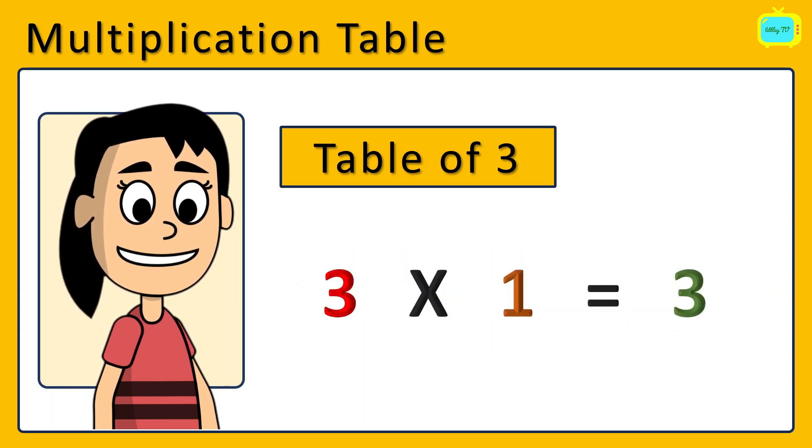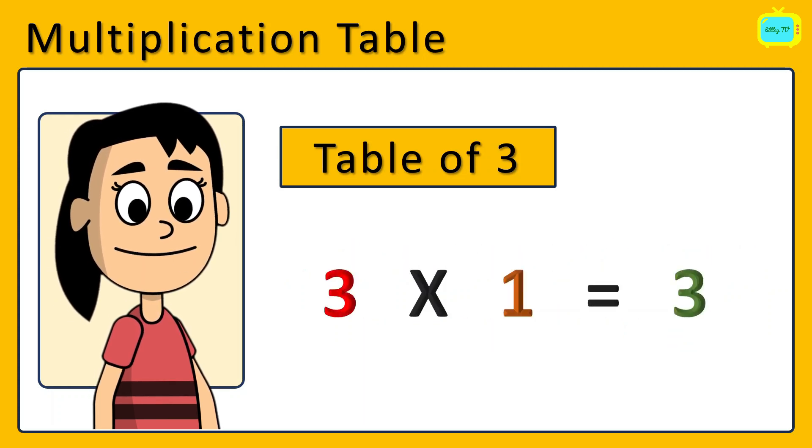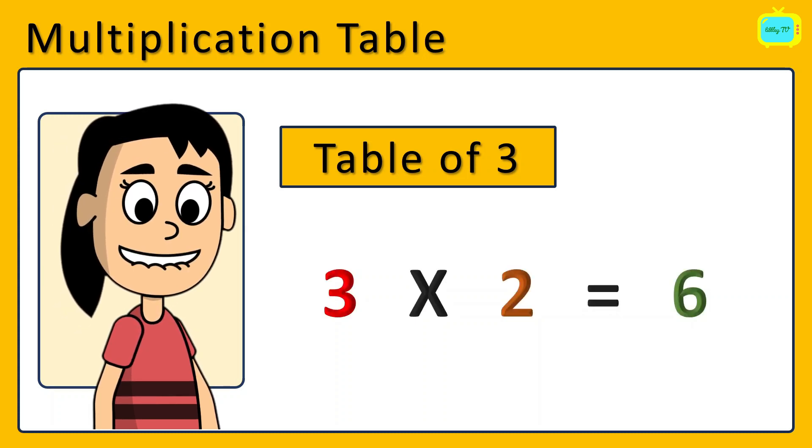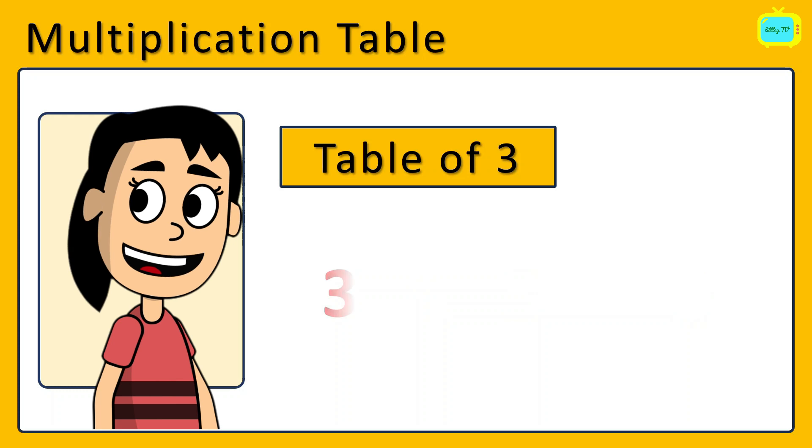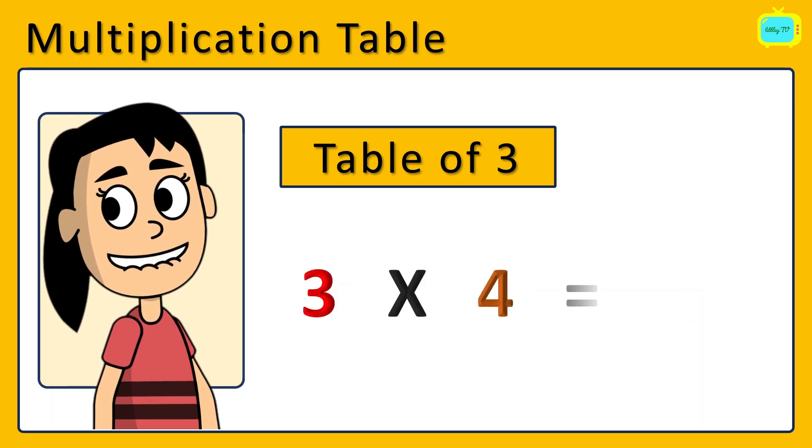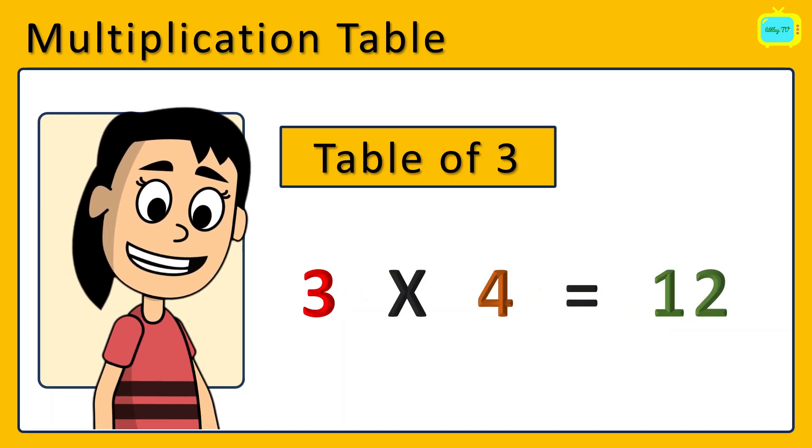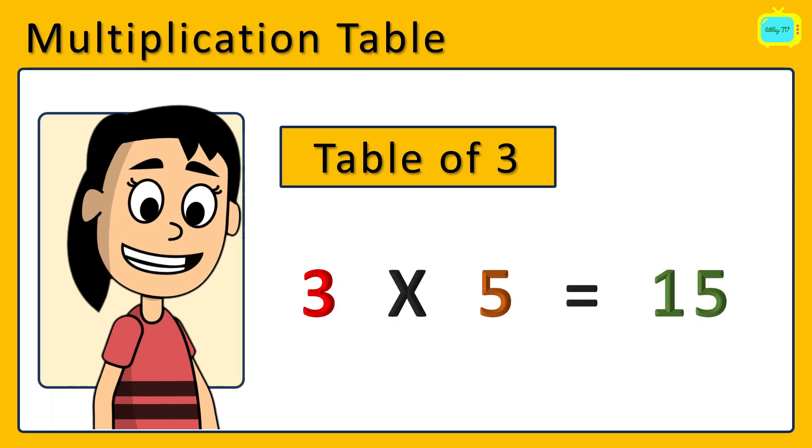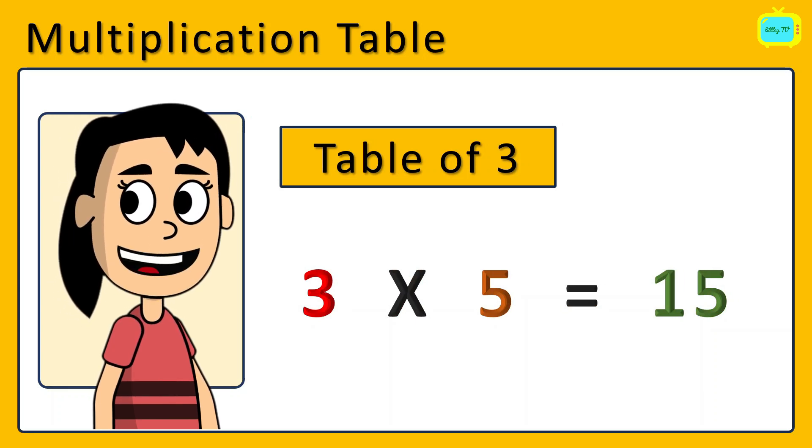3 times 1 is 3. 3 times 1 is 3. 3 times 2 is 6. 3 times 2 is 6. 3 times 3 is 9. 3 times 3 is 9. 3 times 4 is 12. 3 times 4 is 12. 3 times 5 is 15. 3 times 5 is 15.